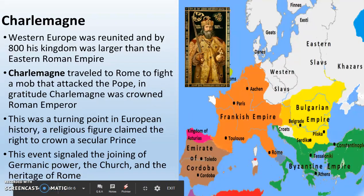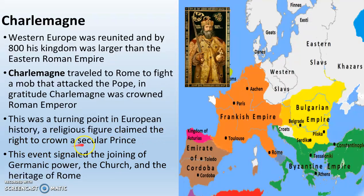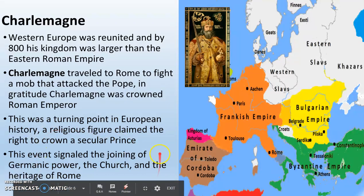This is a turning point in European history because, for the first time, a religious figure — the Pope — claimed the right to crown a secular prince. From now on, if you're going to be the king of an important country, you get crowned by the Pope, which is a big deal because the Pope can say no. This event signals the joining of Germanic power under the Franks and Charlemagne, the Catholic Church, and the Heritage of Rome all into one thing, which is ultimately going to turn into Western Europe.